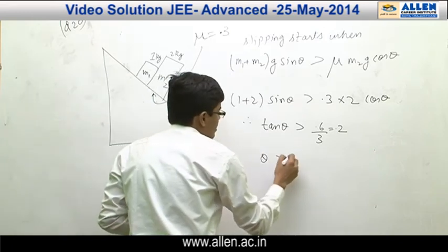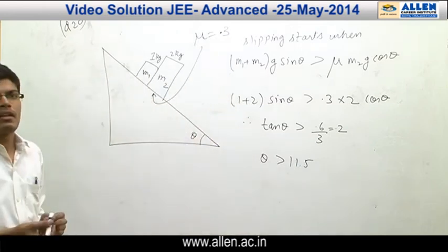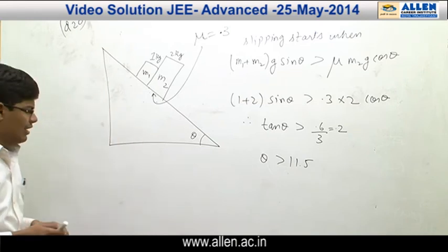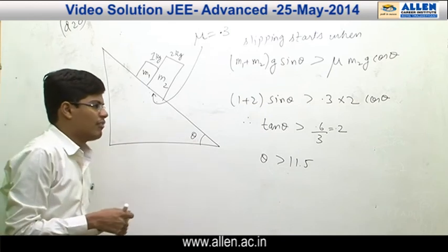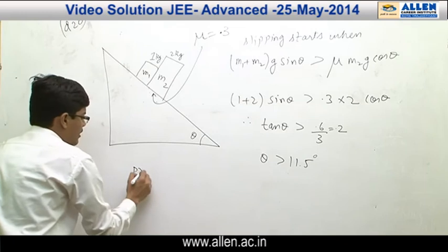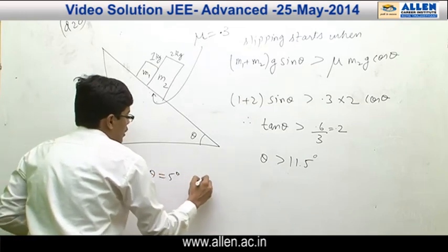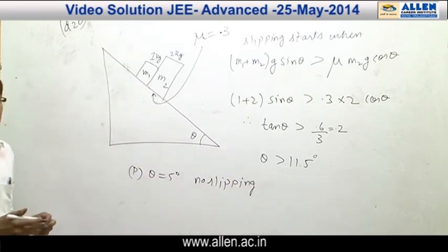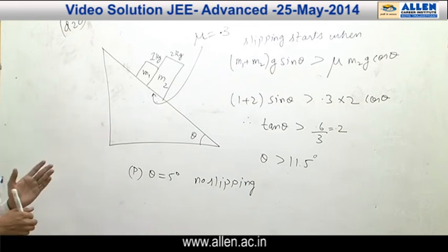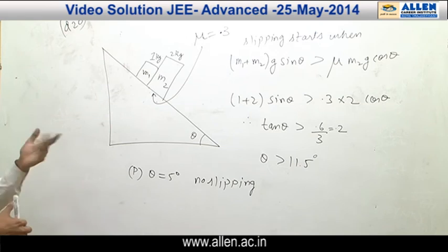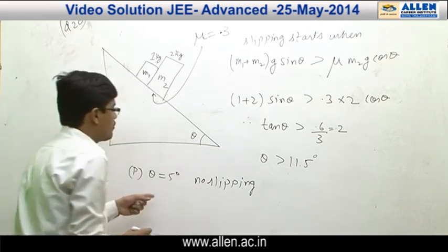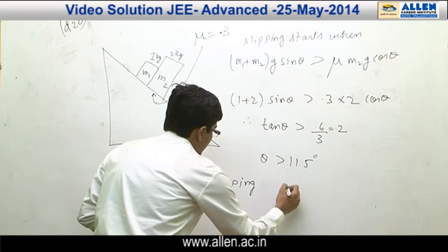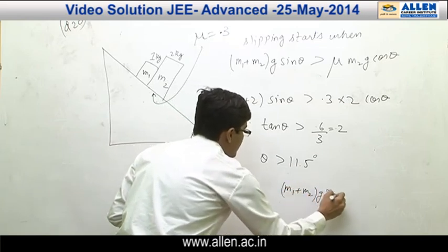So when theta is greater than 11.5°, slipping will occur and kinetic friction will act on the system. For option P, theta = 5°, which is less than 11.5°, so no slipping will occur. It is a case of static friction which will just balance the forces needed. So when theta = 5° and there is no slipping, friction will just be equal to (M1 + M2)g sin θ.